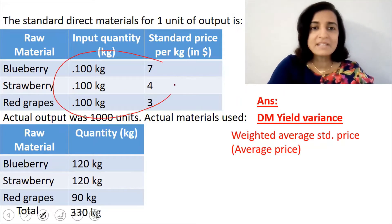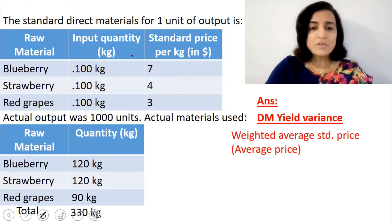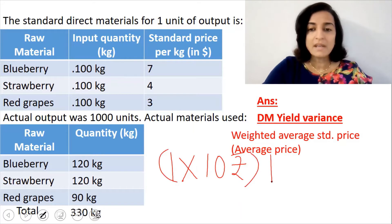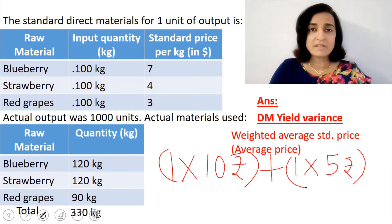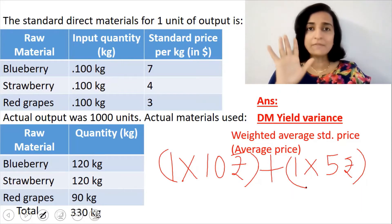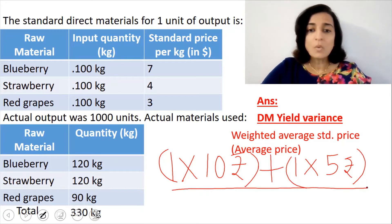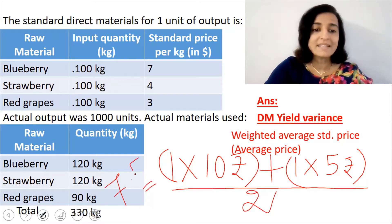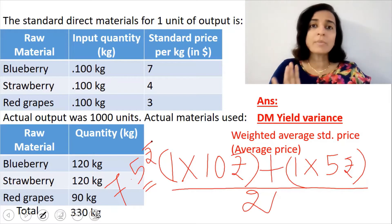Before we calculate the weighted average standard price, I will give you a very simple example. Suppose you buy one egg for 10 rupees — so 1 into 10, 10 rupees is the amount that you spend — plus one egg you bought for 5 rupees, so 1 into 5. The total amount that you spend is 15 rupees. And how many eggs did you get? 2 eggs. So the average price of eggs will be 15 divided by 2, giving 7.5 rupees per egg. This is the average price, and this is the same thing we are going to apply for raw materials.